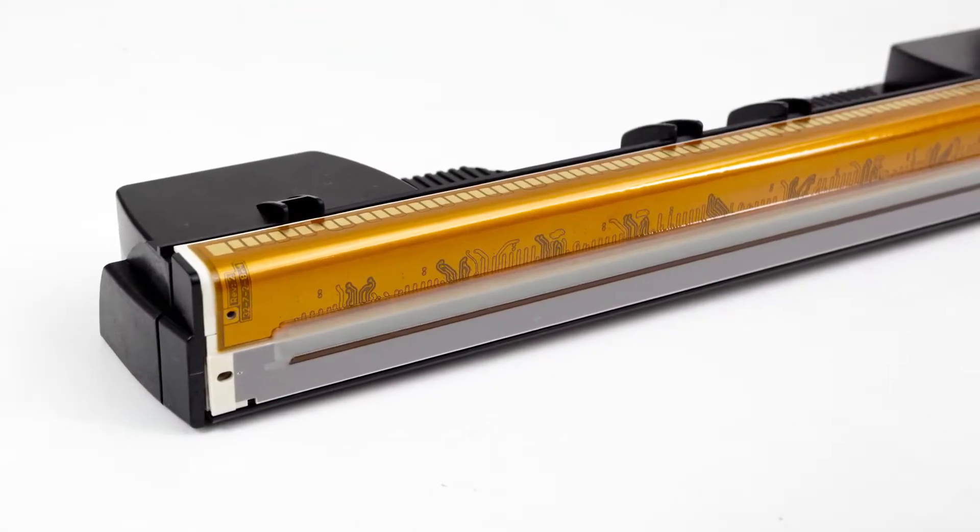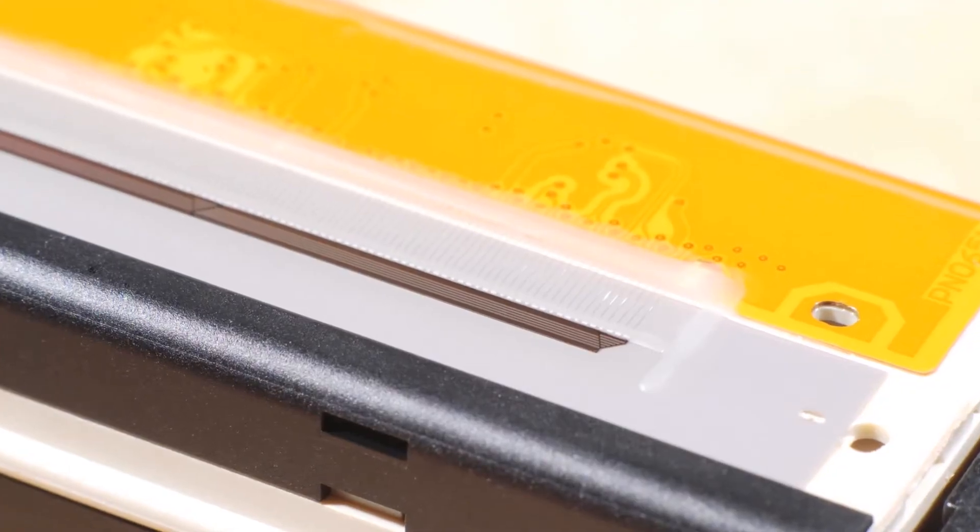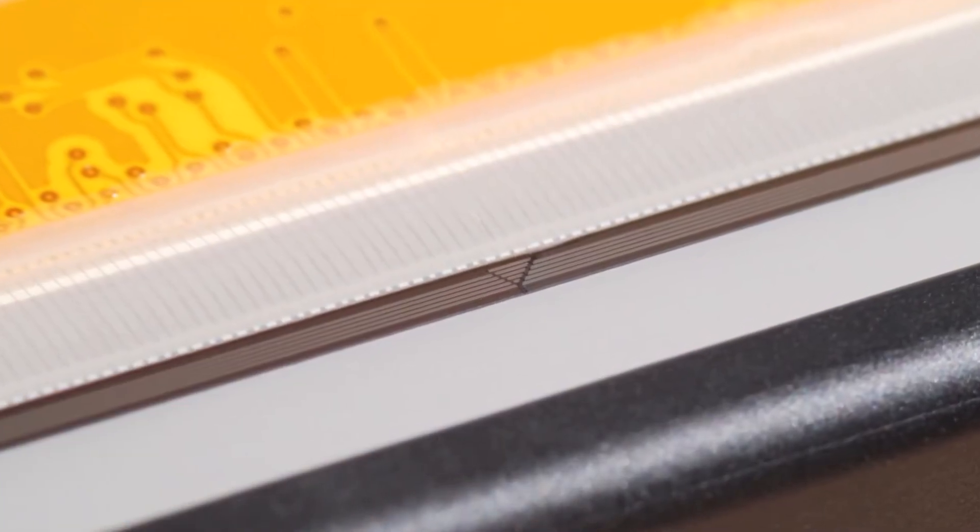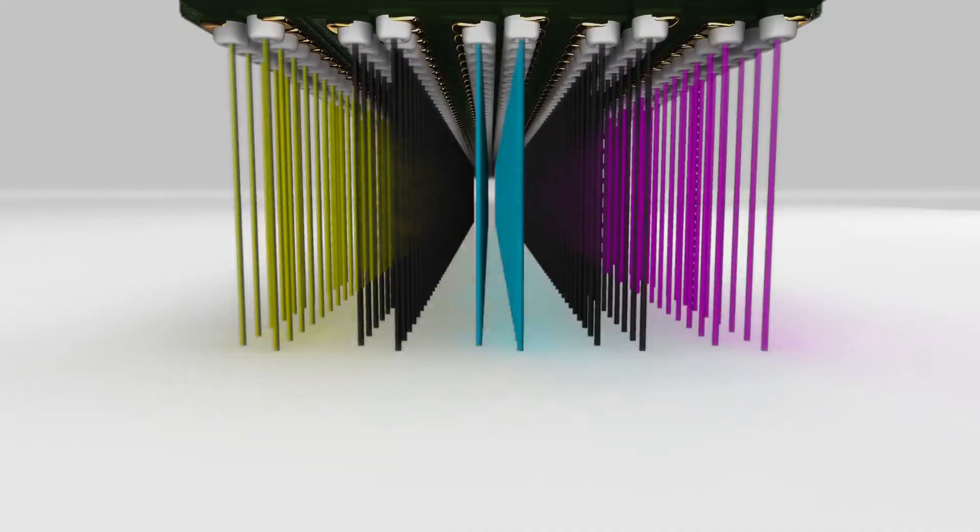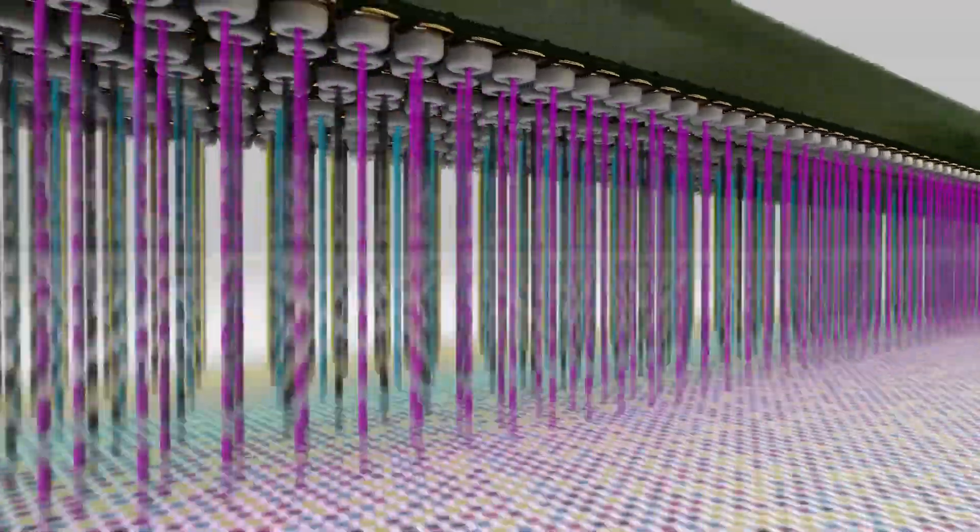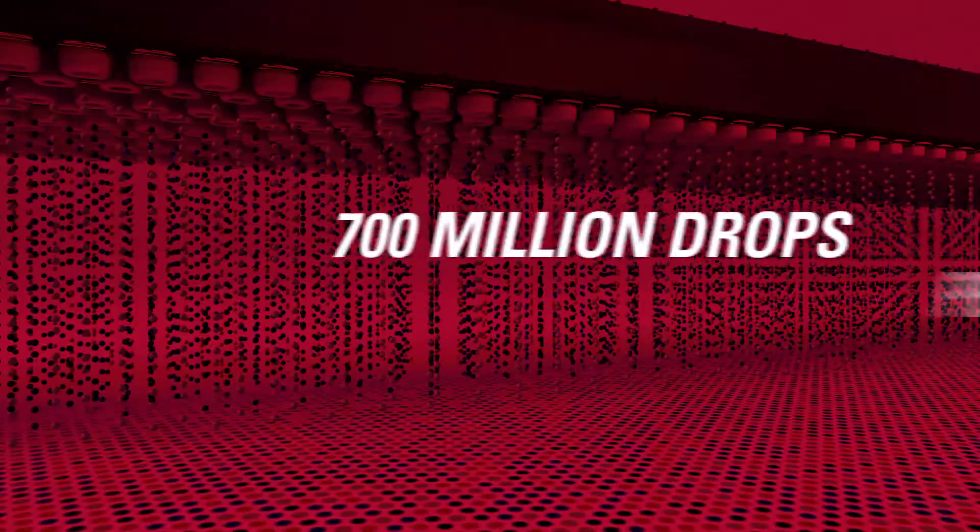This gray bar shows the 11 ink delivery chips that are uniquely aligned across the print head. They control the processes for each of their 6,400 color ink nozzles, which means over 70,400 of them per print head deliver 700 million drops per second to flood the page with a waterfall of ink for rich, beautiful color.